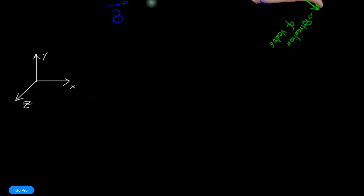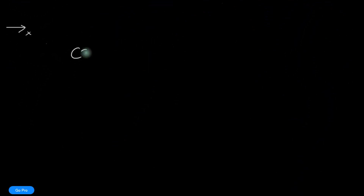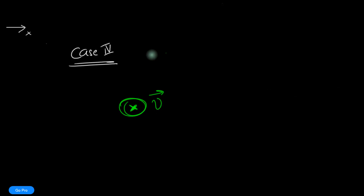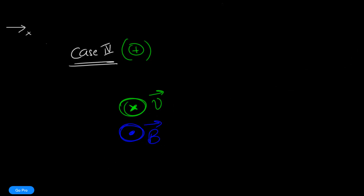One last case — case four, which is a special case for you to do yourself. The velocity vector is going into the screen, the charge is positive, and the magnetic field is coming out of the screen. Can you figure out the direction of the magnetic force? That's an assignment for you. I hope you were able to understand how to get the direction of the magnetic force.